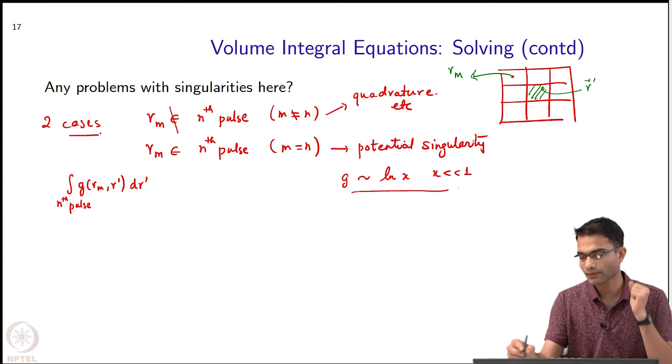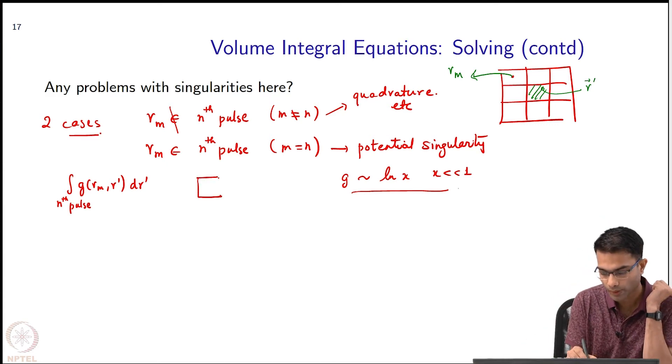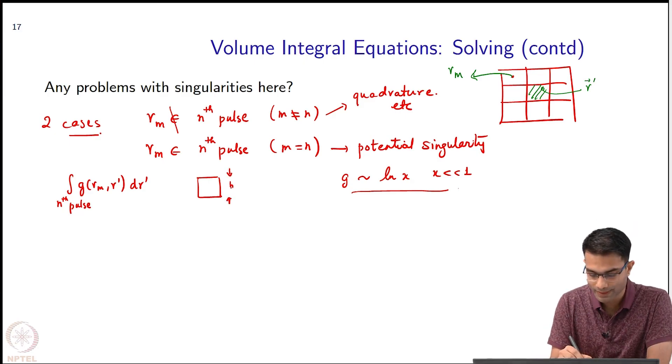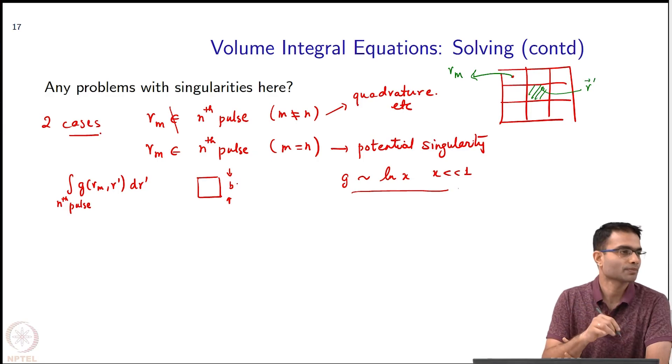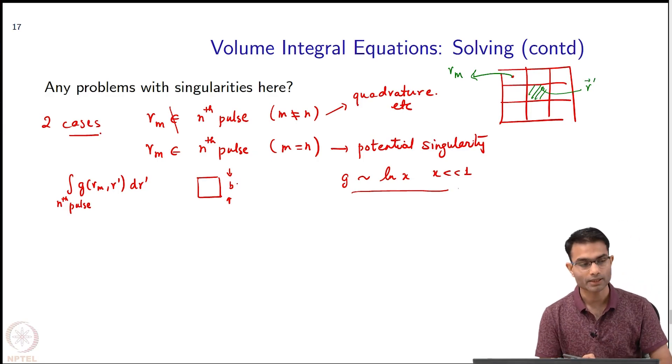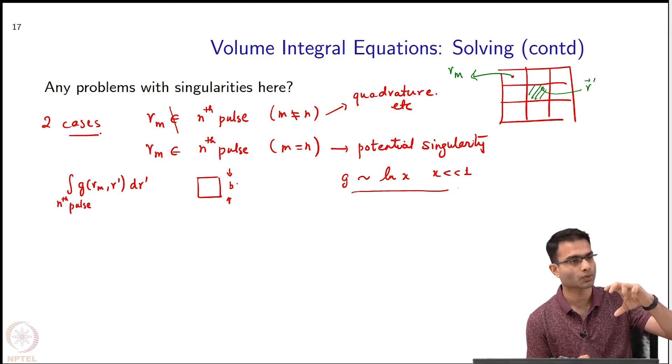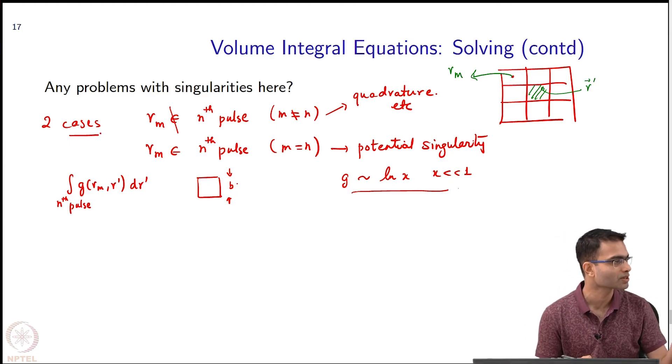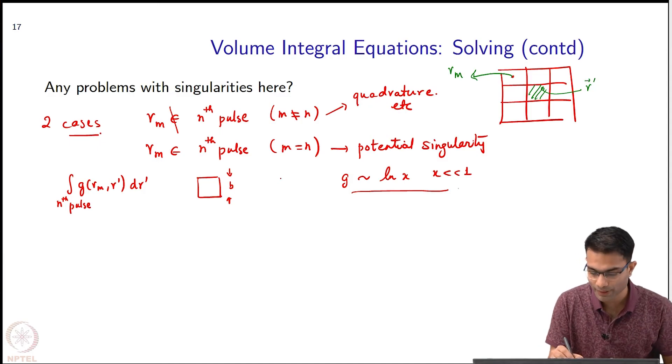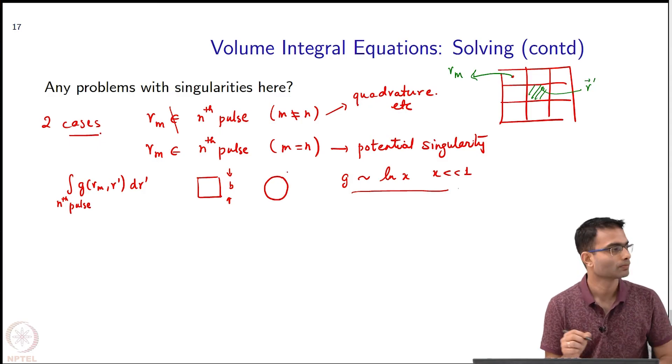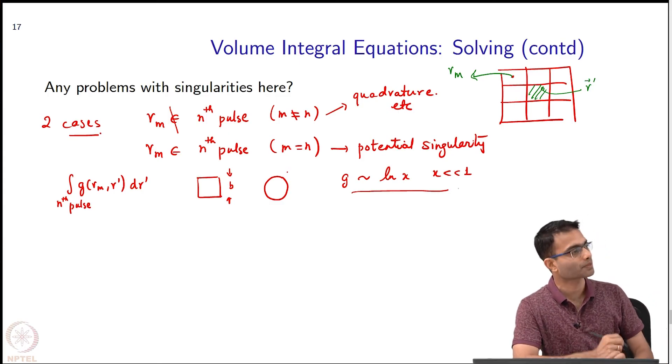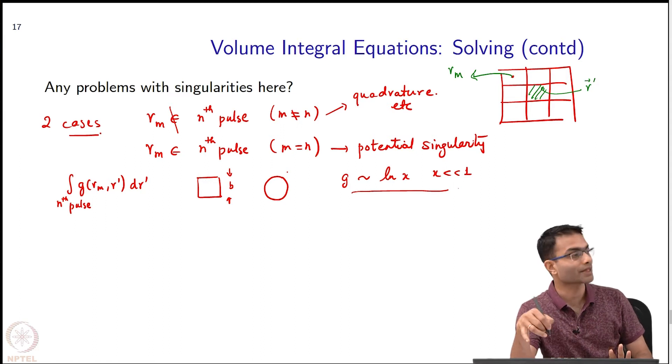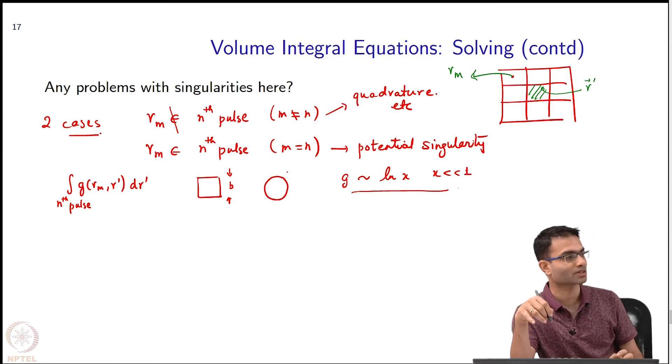Now, the way I have drawn these are square boxes of, let us say, size b. It turns out - I am just giving you information - that the integral of this Hankel function over a square box, there is no closed analytical form for it. Not surprising because it is a Bessel function. However, if I do the same integral over a circle, it turns out that there is a closed analytical expression itself for the integral.